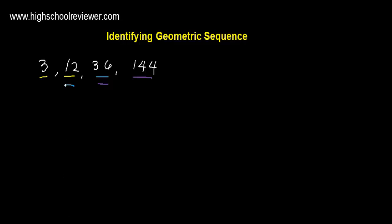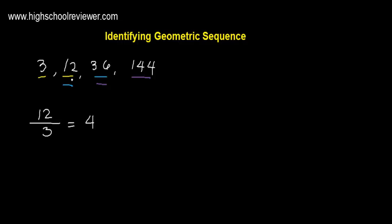We will divide these succeeding numbers. The number on the right will be the numerator. We have 12 on the numerator and 3 as the denominator. 12 divided by 3 is 4. Next, we have 36 over 12 — 36 is the numerator and 12 is the denominator. 36 divided by 12 equals 3. And then we have 144 over 36. 144 divided by 36 is equal to 4.